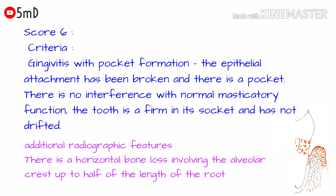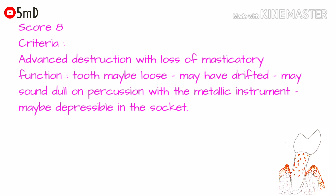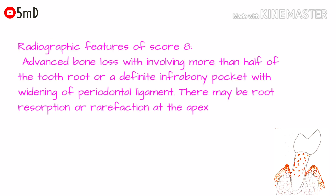The radiographic features for score six will be horizontal bone loss involving the alveolar crest up to at least half of the length of the root. Score eight is assigned when there is advanced destruction with loss of masticatory function. The tooth is loose, may have drifted, may sound dull on percussion with a metallic instrument, and may be depressible in the socket. Radiographic features show advanced bone loss involving more than half of the tooth root, or a definite infrabony pocket, widening of the periodontal ligament, and there may be root resorption or rarefaction at the apex.